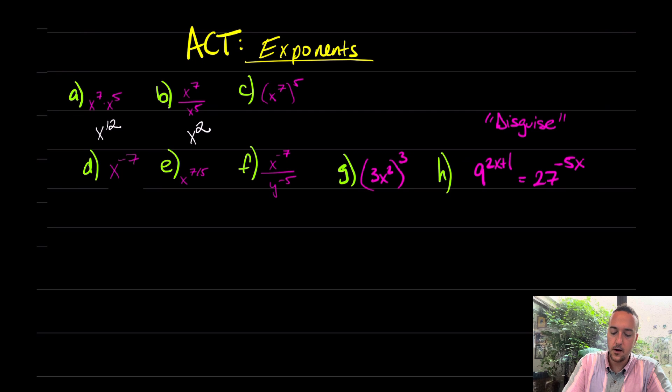Right here, power of a power, x to the seventh to the fifth, what are we going to do? We multiply, x to the 35th. Looking at part D, x to the negative seventh. Well, that's going to be one over x to the seventh. More specifically, a negative exponent in the top will send it to the bottom, and we'll flesh that out a little bit more in part F.